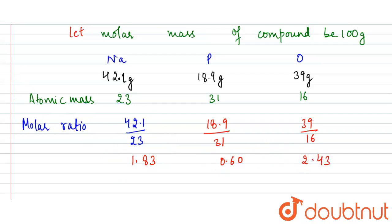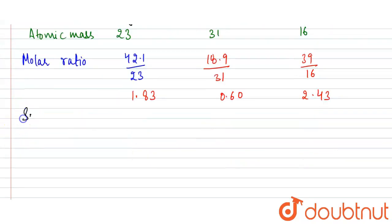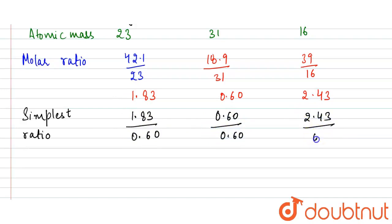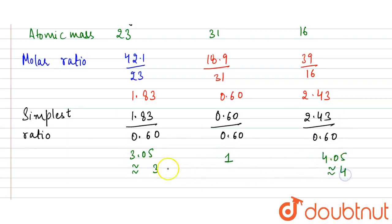Now we calculate the simplest whole number ratio. We divide each molar ratio by the smallest value, which is 0.60. So: 1.83 / 0.60 ≈ 3.05 ≈ 3; 0.60 / 0.60 = 1; 2.43 / 0.60 ≈ 4.05 ≈ 4.